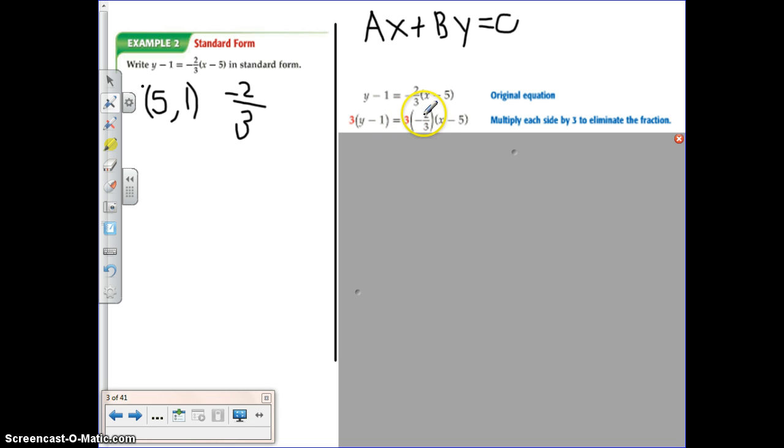So 3 times negative 2 thirds is going to leave me with just negative 2, and then now I have 3 on the outside of my parentheses and y minus 1 on the inside of my parentheses on this side.